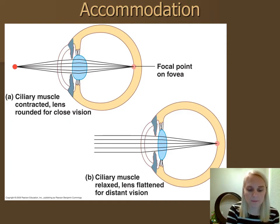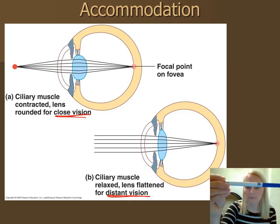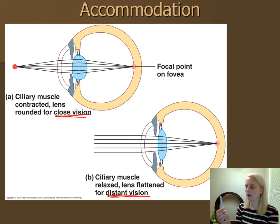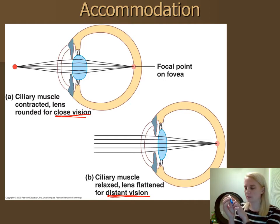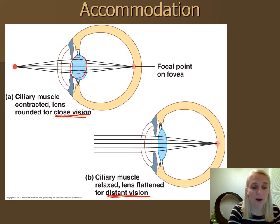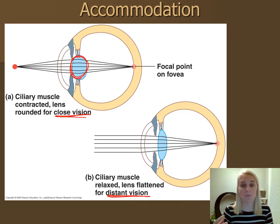Here we have close vision versus distant vision — these are the two scenarios. So I've got a marker here with some small writing on it. I'm going to bring it really close up so I can read the word 'blue' — about right there, and that's in focus to me. That's close vision. What my lens has to do is — because my eyeball's retina can't change shape to make the focal distance further away — my lens has to get rounder. The rounder lens brings that focal point closer when the origin of light is closer.